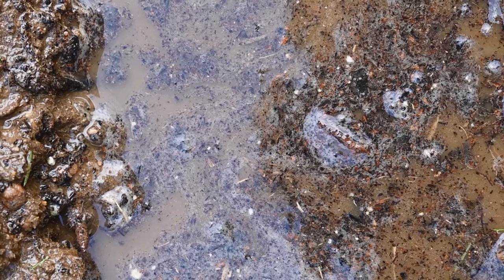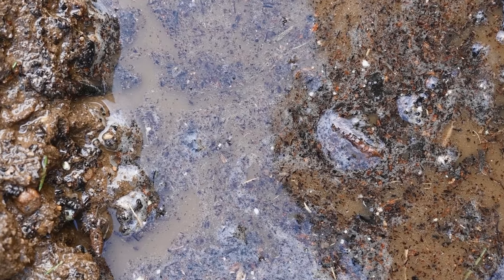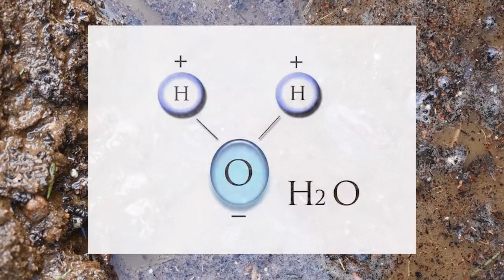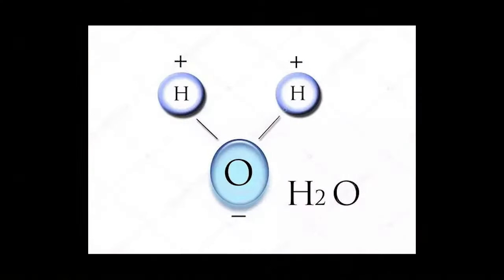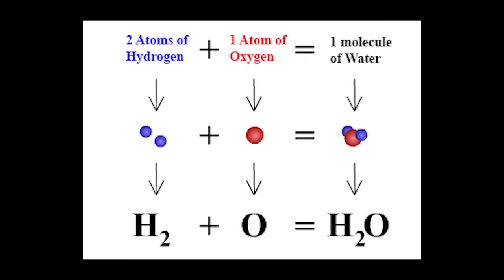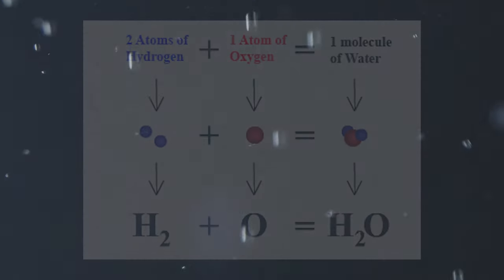Everything begins with a single molecule: H2O. This simple yet extraordinary molecule, made up of two hydrogen atoms and one oxygen atom, is the lifeblood of our planet. Water is far more than just H2O, though. It is a dynamic substance that is constantly on the move, reshaping our world and sustaining life as it travels. This journey of water, from the sky to the Earth and back again, is known as the water cycle.